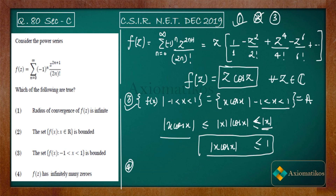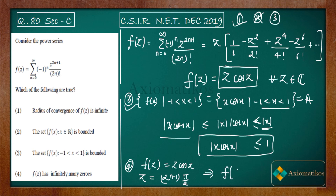Option 4 says f(z) has infinitely many zeros. We have f(z) = z·cos(z). If we place z = (2n−1)π/2, the cos part gives zero. This means f((2n−1)π/2) = 0 for all n ∈ ℕ. Since this holds for every natural number n, f(z) has infinitely many zeros. So Option 4 is also correct.